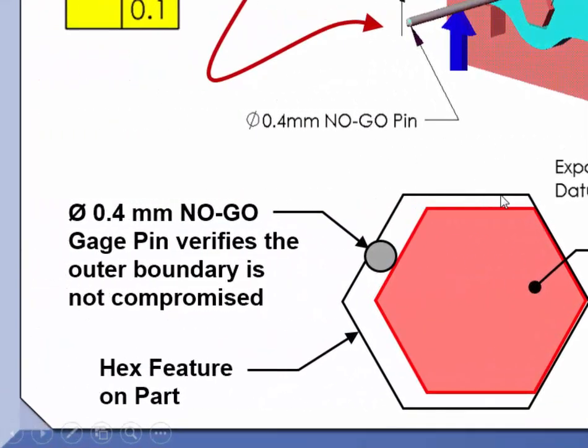As you can see on the slide, the actual hex feature on the part is outlined in black. If the part can be mounted on the gauge, we know that no portion of the feature has violated its inner boundary.